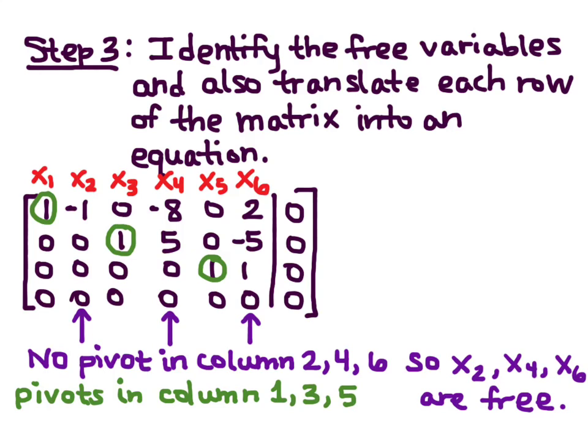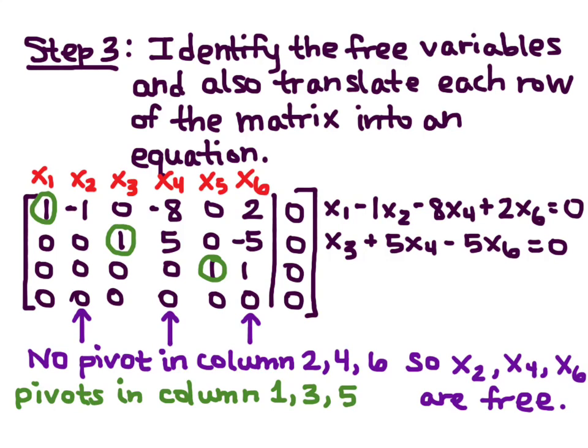Now, I want to translate row 1 into an equation. So, I use the coefficients in the matrix, and I get X1 minus 1X2 minus 8X4 plus 2X6 equals 0. Doing this with the rest of the rows, I get X3 plus 5X4 minus 5X6 equals 0, using the appropriate coefficients from my matrix, and X5 plus X6 equals 0.